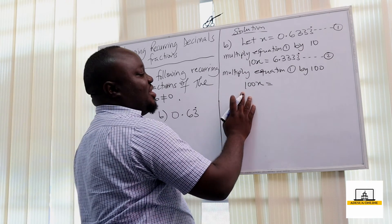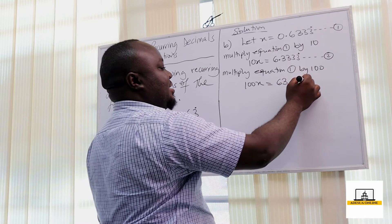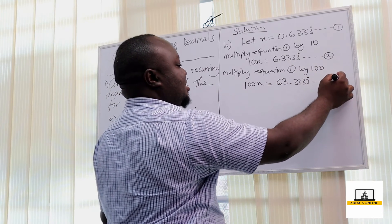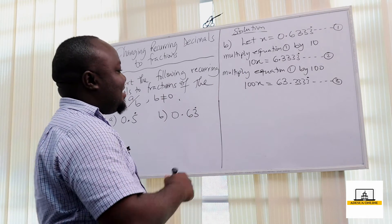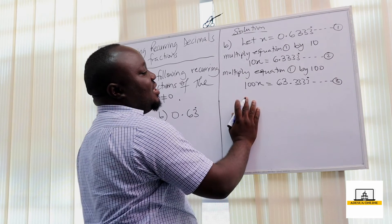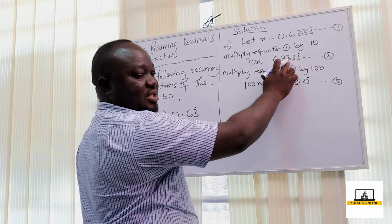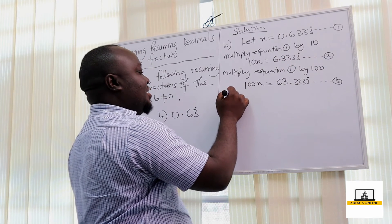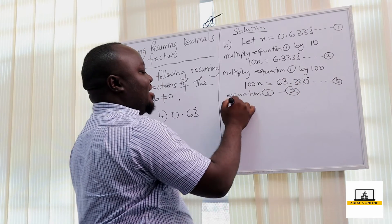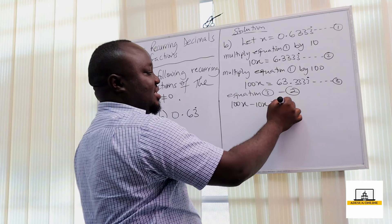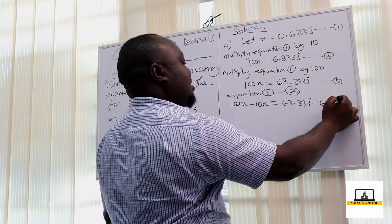Multiplying equation 1 by 100 gives: 100x = 63.3333... recurring. We call this equation 3. Comparing equation 2 and equation 3, we see that subtracting equation 2 from equation 3 will eliminate the recurring decimal. So equation 3 minus equation 2: 100x minus 10x equals 63.3333... minus 6.3333...